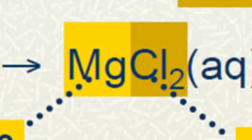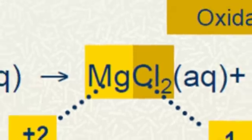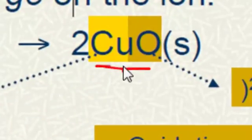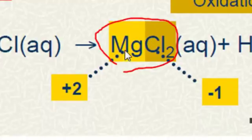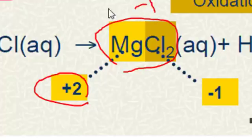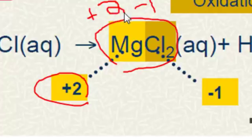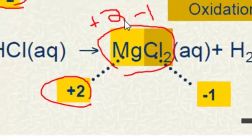The oxidation number of simple ions is always the same as the charge. In copper(II) oxide (CuO), copper is plus two and oxygen is minus two. In magnesium chloride (MgCl₂), magnesium is plus two and each chloride is minus one — those are the oxidation states in that ionic compound.